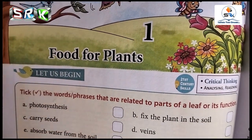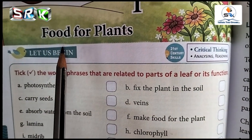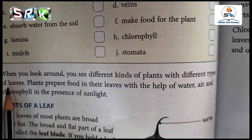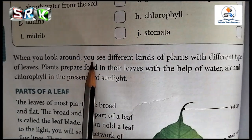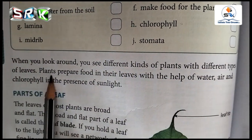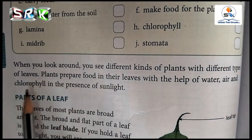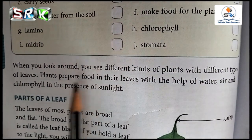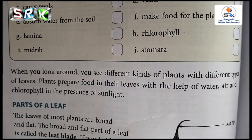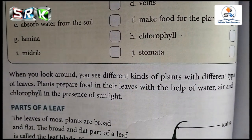The topic is 'Food for Plants.' I am going to read the paragraph — listen carefully. When you look around you, you see different kinds of plants with different types of leaves. Plants prepare food in their leaves with the help of water, air, and chlorophyll in the presence of sunlight.